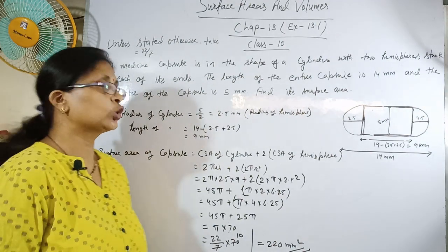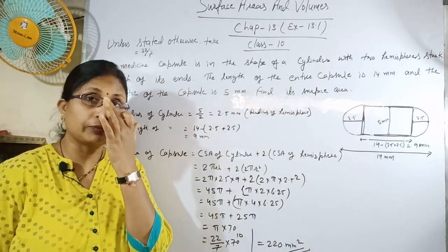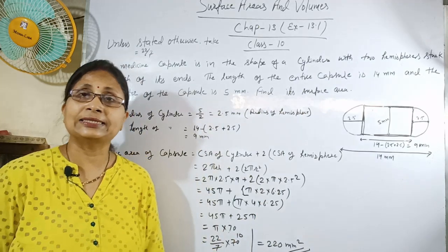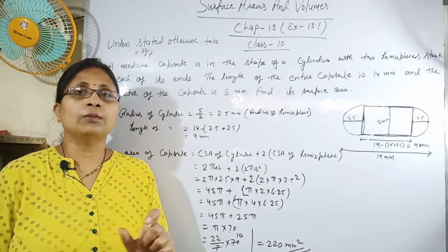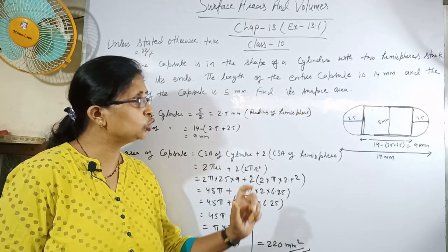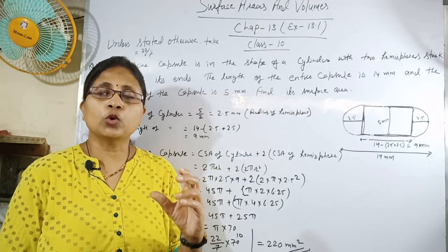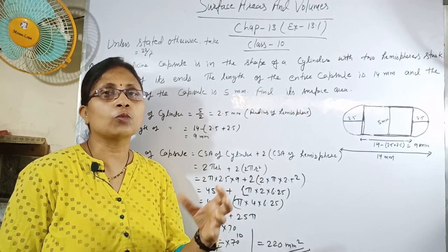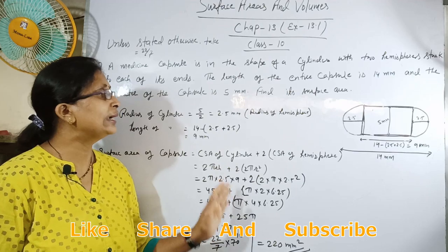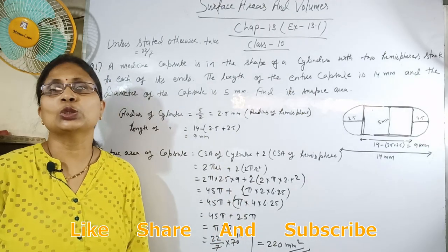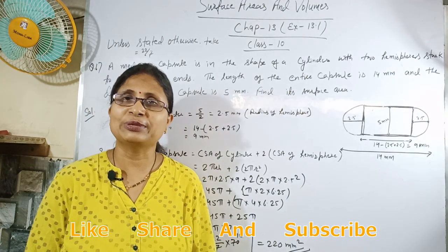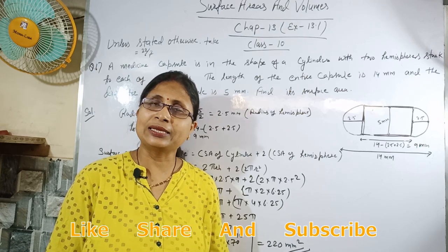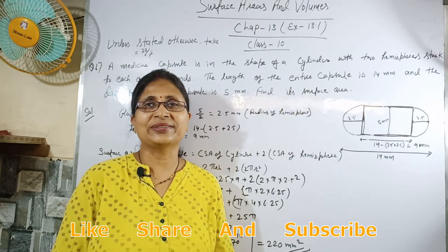जब दो तरह के figures mix up करके complete solid figure बनाई जाती है, तो जो भी solid figures attached हों उनका formula लेंगे और फिर उन्हें add करके solution करेंगे। I hope solution समझ में आया होगा। Please channel को subscribe करें, bell icon को दबाएं, like और share करना मत भूलें।